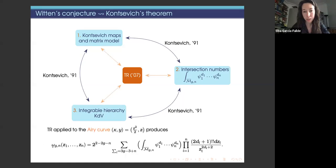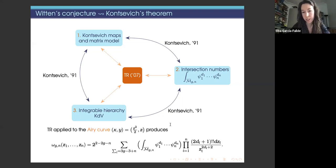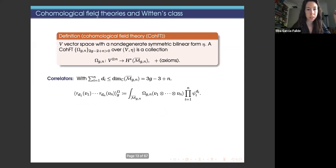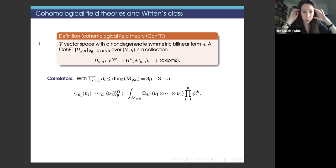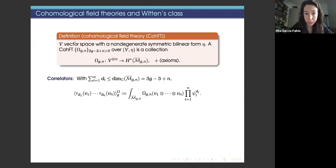Nowadays we understand very well the relations to topological recursion. For example, topological recursion applied to what we call the Airy curve produces intersection numbers in a precise way. Now I will talk briefly about cohomological field theories.